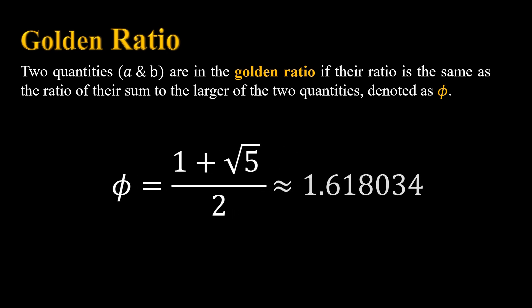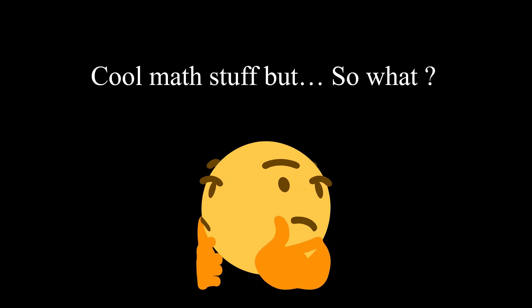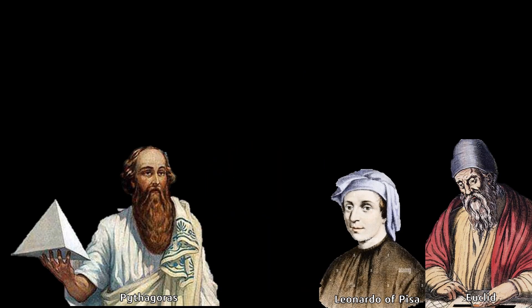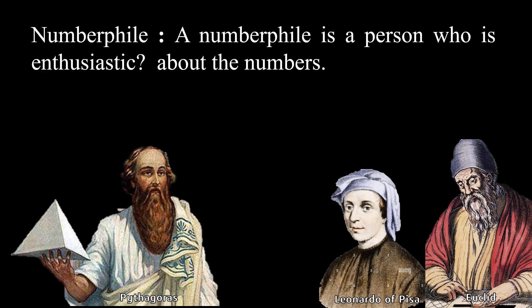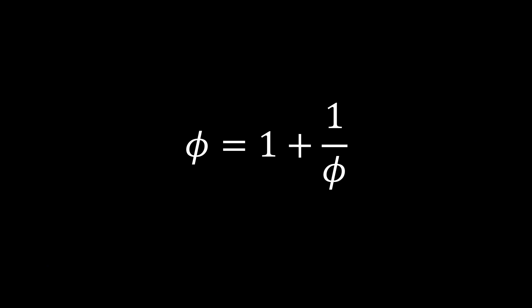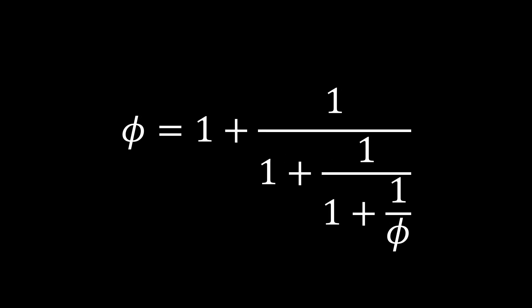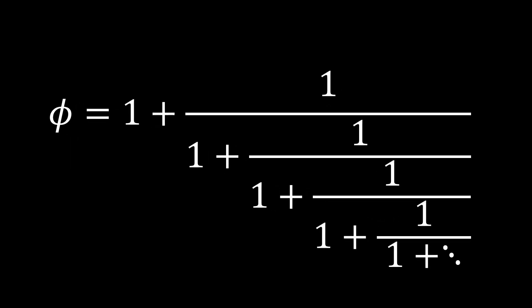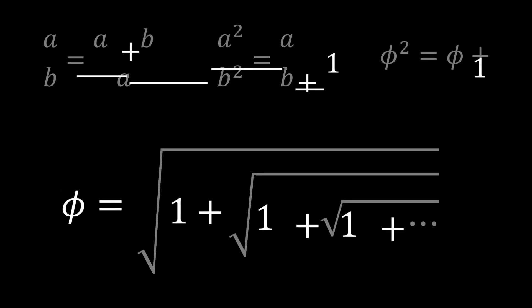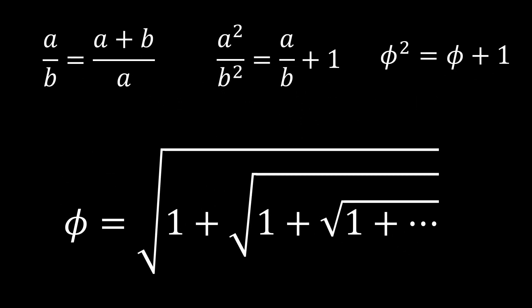If you go ahead and compute it, you will find that phi is roughly equal to 1.618. It is actually this number that mostly defines the beauty of our nature. But let's say you're not impressed by this number — you're not a numberphile who dreams about numbers all day, and you're not impressed by the fact that you can compute it with 1 plus 1 over 1 plus 1 over 1 until infinity, or that you can compute it with the square root of 1 plus the square root of 1 plus the square root of 1, and so on.